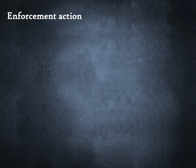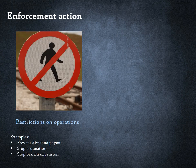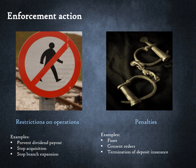There are two broad types of enforcement actions that regulators take when a company is found in violation of regulations. The first is putting restrictions on how they operate — examples include preventing payout of dividends, stopping them from growing either organically or through acquisitions, or stopping them from adding a branch. The second is penalties — this could be monetary penalties. Banks may be subject to consent orders which mandate actions that banks must take and often involve hiring external consultants. In extreme cases, regulators may withdraw deposit insurance.